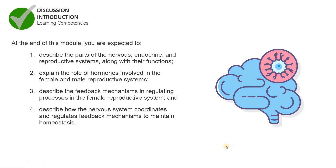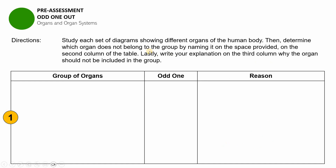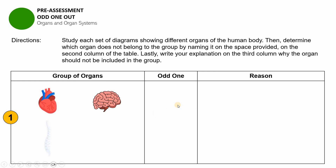For the second part, you might need a one-fourth sheet of paper. Please write your name, grade and section, and the date. For the general directions of this pre-assessment, you have to study each set of diagrams or each group of human body organs, then determine which organ does not belong to the group by naming it in the designated column. In the last column, write your reason for choosing that particular organ. Please begin answering.